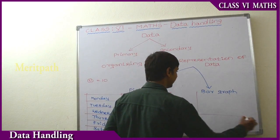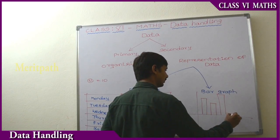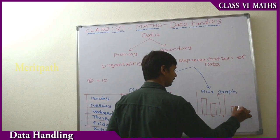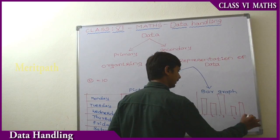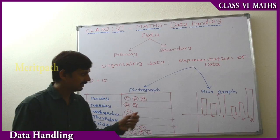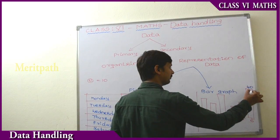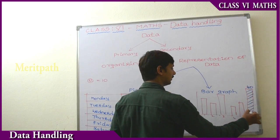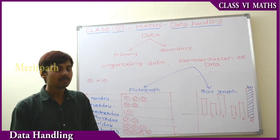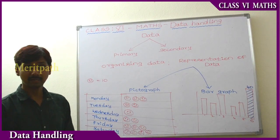Now we will use rectangles to represent the same data — and that is called a bar graph. We draw one rectangle for each category. For example, for Saturday that is 40 — we use a rectangle to represent that. So this is the definition: data represented as pictures is a pictograph, and data represented using rectangles is called a bar graph.